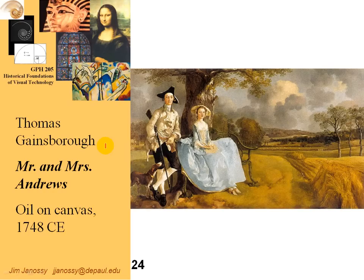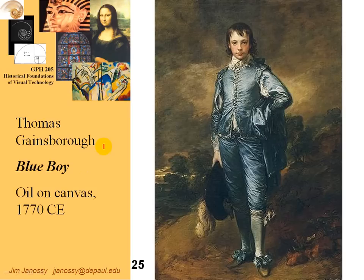Gainsborough was not brought up with the same educated background that Reynolds was, but he was also a very accomplished portrait painter. Here we have something that Gainsborough painted that's not in the Gombrich textbook either — this is Blue Boy. The reason it was painted this way was in clear violation of one of Reynolds' rules: that blue really should serve as a background color and should never be used as the color for the main object in the portrait. To flaunt his violation of that rule, when Gainsborough painted this portrait he purposely had the young man dressed in blue and made the background brown.